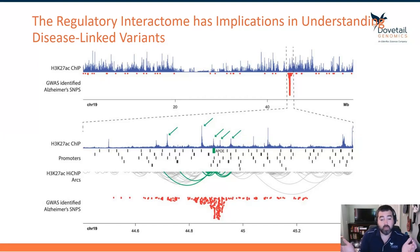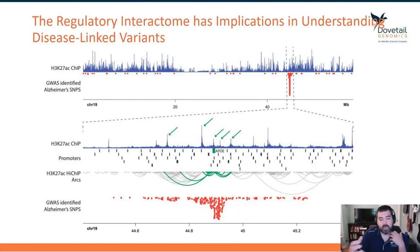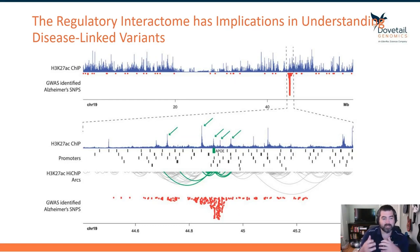So even though these variants don't occur directly at the ApoE promoter or gene body — occurring kilobases away — these SNPs could actually impact the ability for that acetylation to occur and therefore destroy an enhancer-promoter interaction that is critical for ApoE's function.